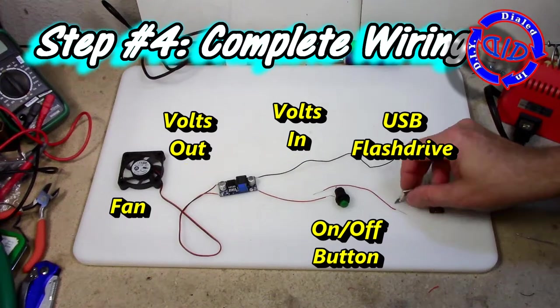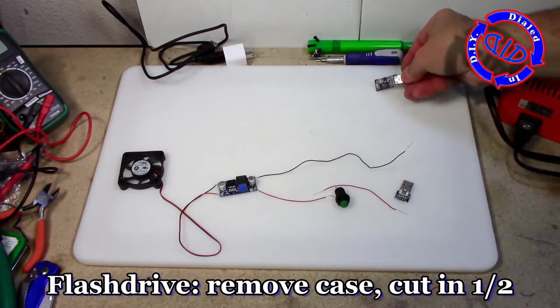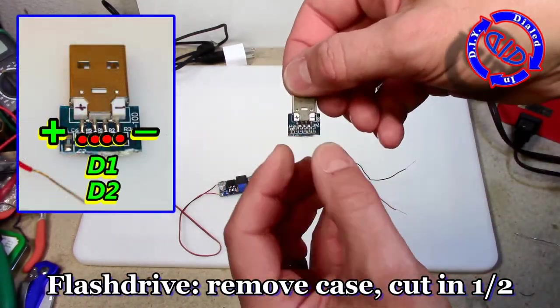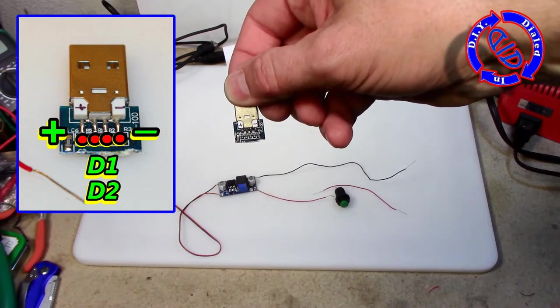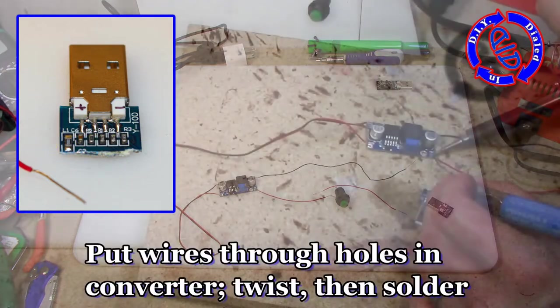For my power input on this project I'm going to take an old flash drive that is now useless because it has such a small memory capacity. I'm going to cut it in half and use the outside pins to connect wires so I can get my positive and negative leads for my power source.